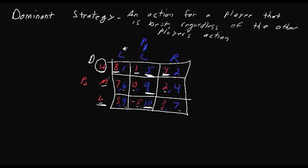But we see here is that regardless of what player two does, if player two plays H, M, or L, player one would want to play C. So C is a dominant strategy for player one.